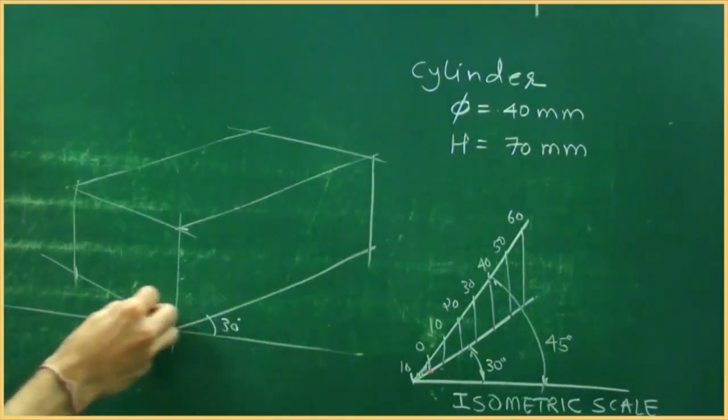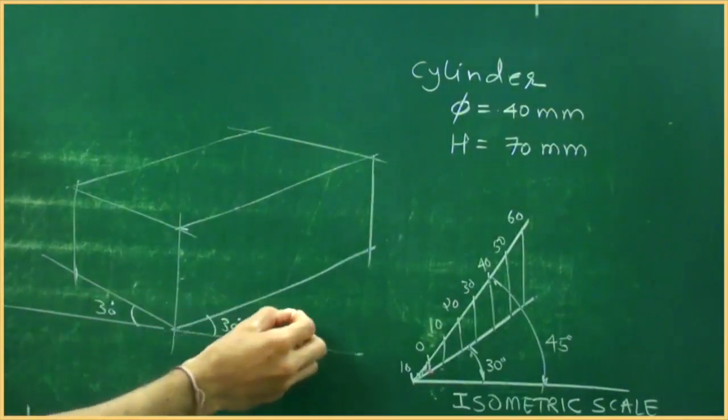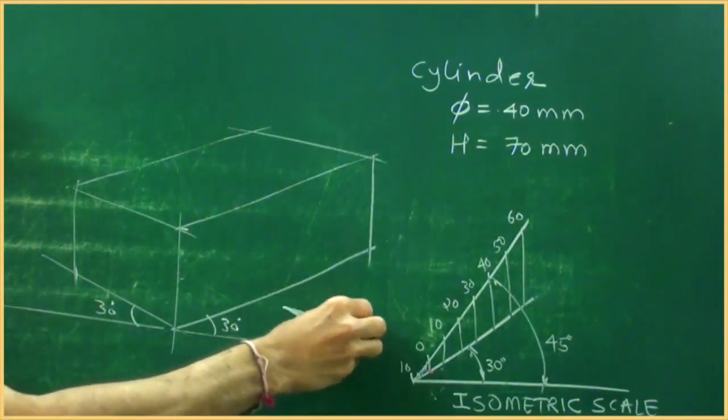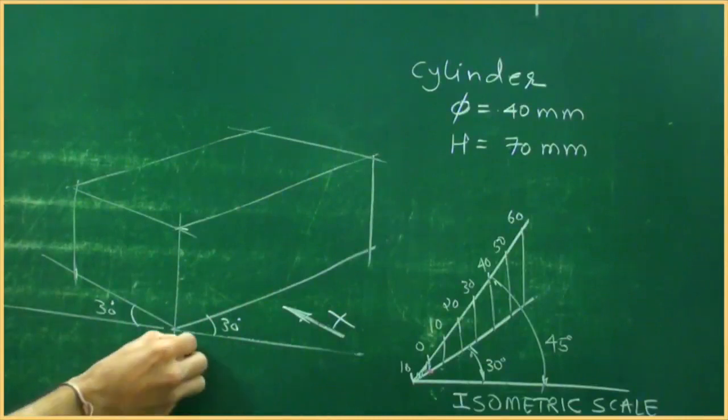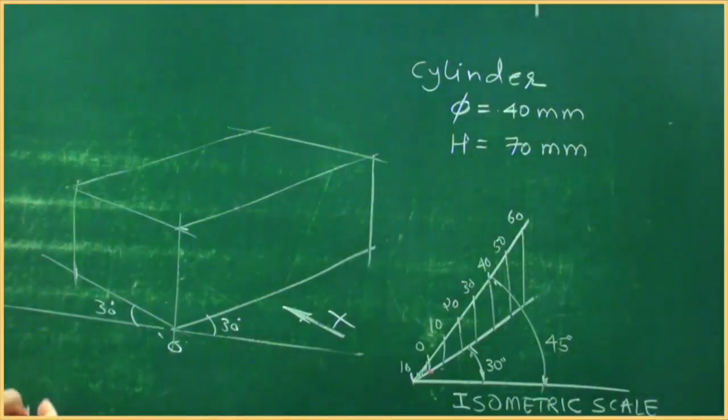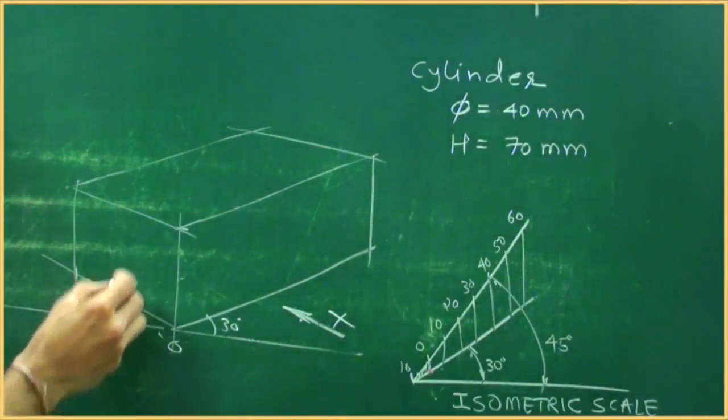this is 30 degree, 30 degree, axis parallel to HP and VP, so observer will see from this direction, this is origin. What we are doing, we are drawing isometric projection, right